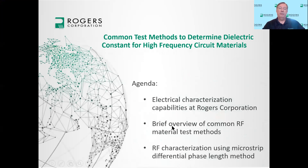The agenda I plan on following is shown here. First I'll talk about some of the electrical characterization capabilities that we have here at Rogers — I'm going to go through that rather quickly. After that I'll talk about a brief overview of common RF material test methods used to determine the Dk or Df of the material — material test methods, not circuit test methods. The circuit test method I'm going to talk about is RF characterization using microstrip differential phase length.